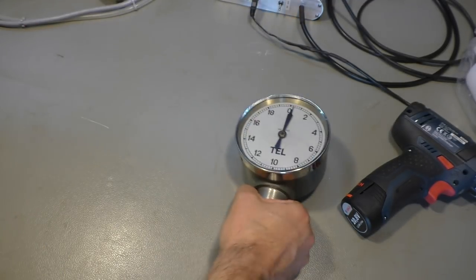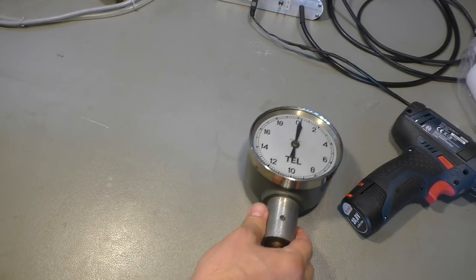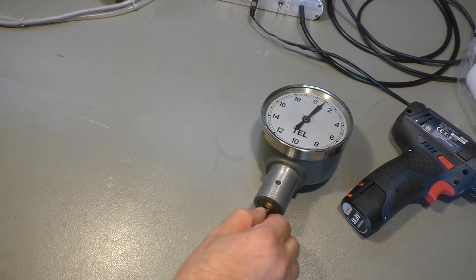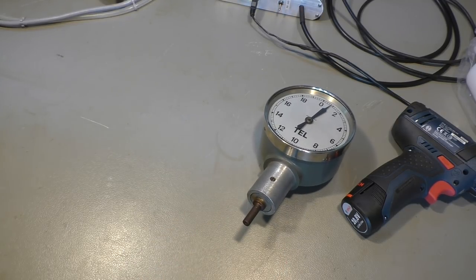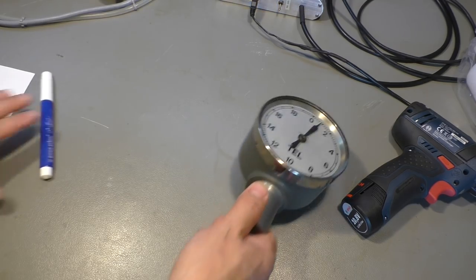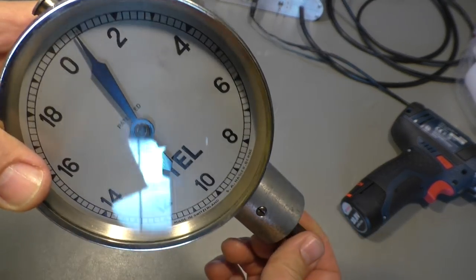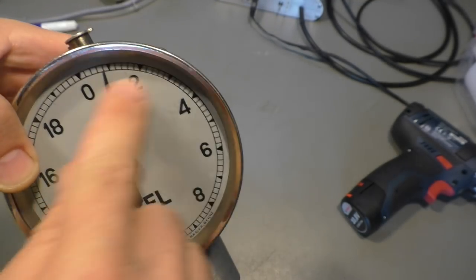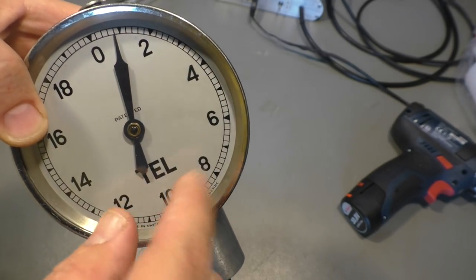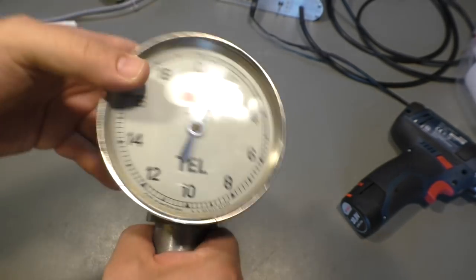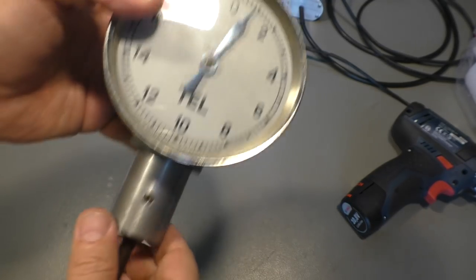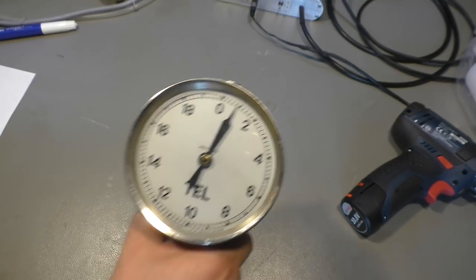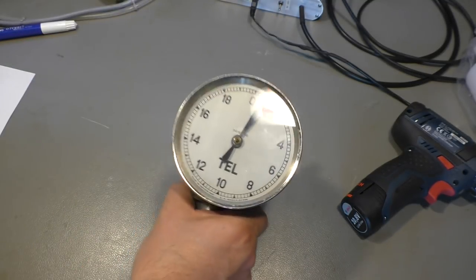First of all, what does it do? Well, it measures the number of revolutions per minute from whatever turns here. Or if you attach this to a wheel of a vehicle, of a car, of a train maybe, you could also measure the speed. You just have to adjust the scale here, realign the numbers and stuff, so you can measure speed or revolutions per minute or something like that.